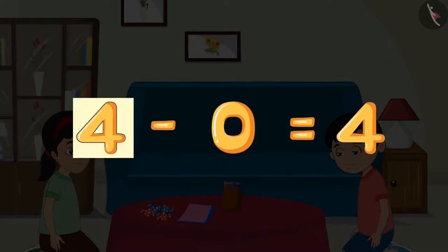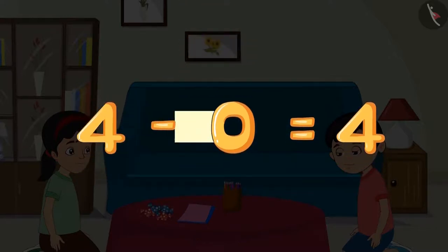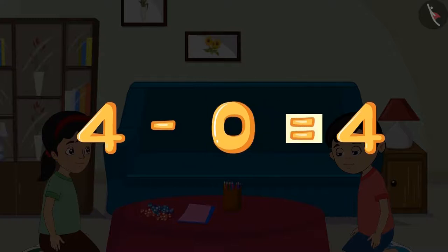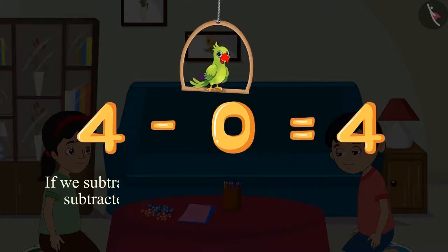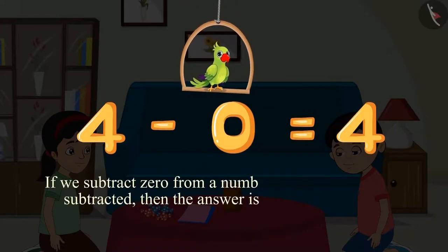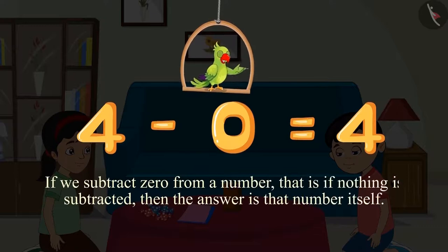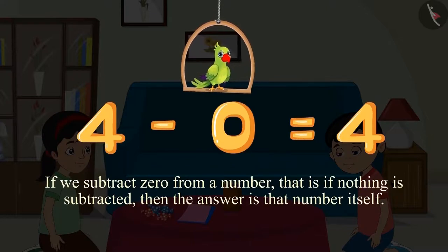This means four minus zero equals four. If we subtract zero from a number — that is, if nothing is subtracted — then the answer is that number itself.